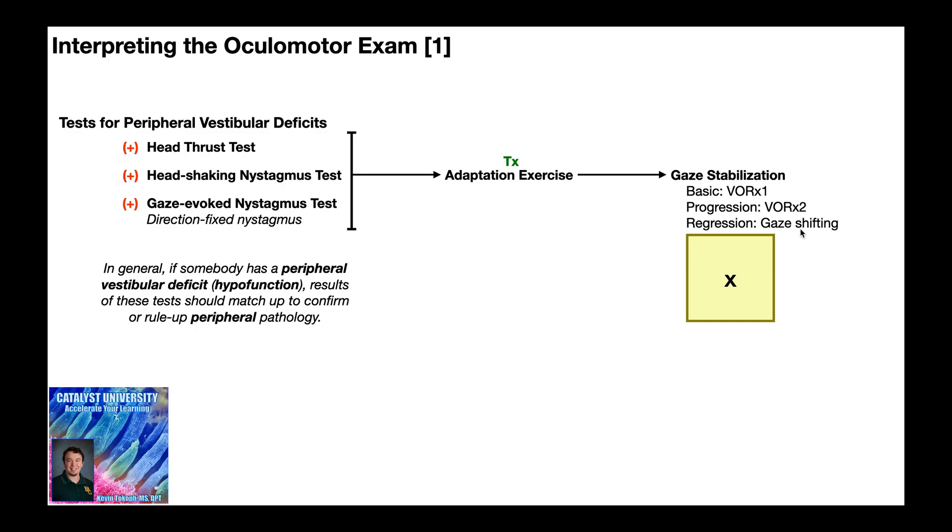Gaze shifting is not given very often. There's really two major conditions where it's given. Number one, when the VOR times one is so intense for the patient that it causes severe dizziness-related symptoms that don't reduce immediately. They take a long time to come back down, and it basically ruins the person's day. And so high severity, high irritability of symptoms.